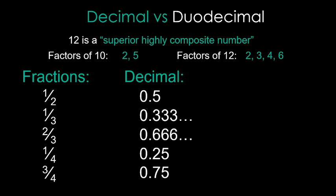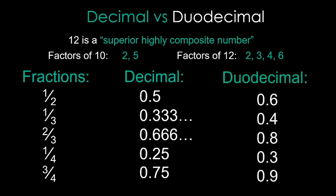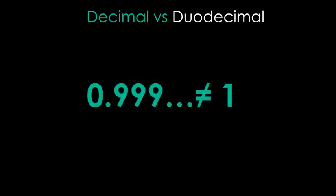Now let's look at how duodecimal handles these. One-half is actually 0.6, since six is half of twelve. That means that one-third is 0.4, two-thirds is 0.8, one-quarter is 0.3, and three-quarters is 0.9. Remember how frustrated you were when you found out that 0.9 repeating was not just close to one, but actually equal to one? Well in duodecimal, you don't have that problem anymore. It becomes clean and simple.